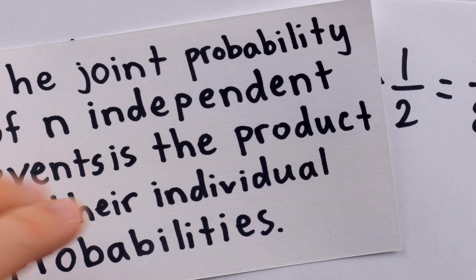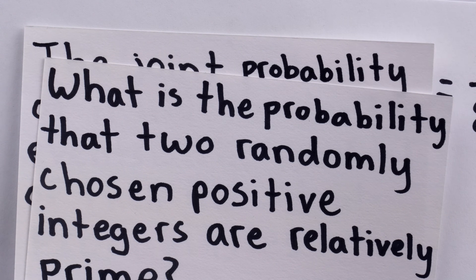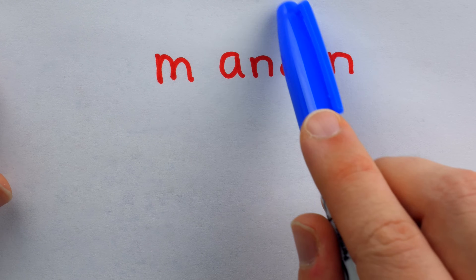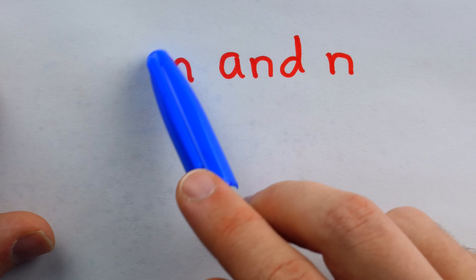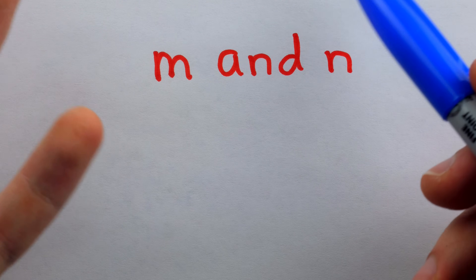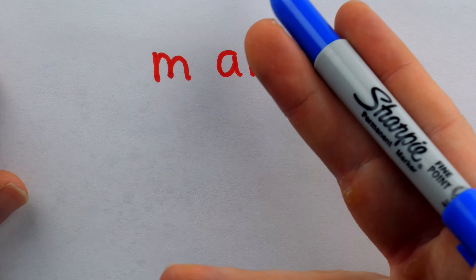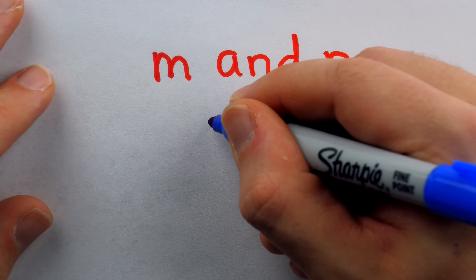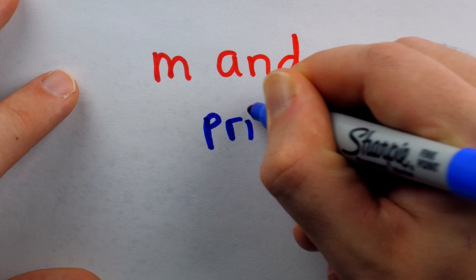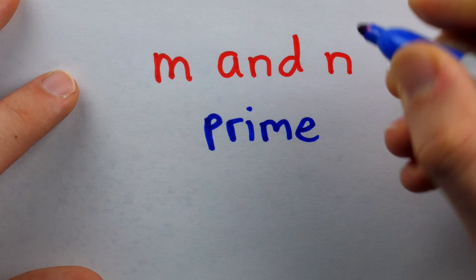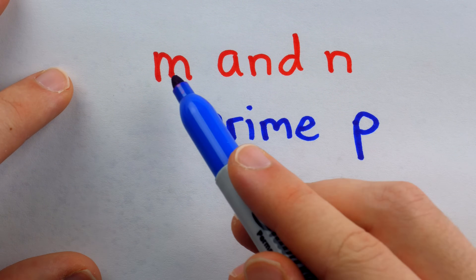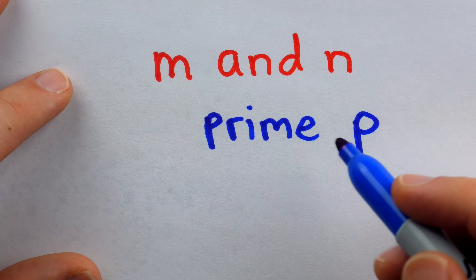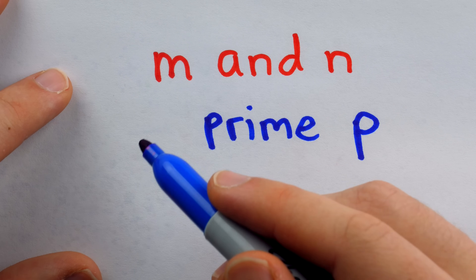Now we will need some more mathematical machinery, but this is enough to get us started. Let's say we have our two randomly chosen positive integers m and n. When trying to figure out if they have any factors in common, it's sufficient to just consider their prime factors. So let's say we have an arbitrary prime number p. We may ask: how likely is it that this prime number p divides m — that is, how likely is it that p is a factor of m?